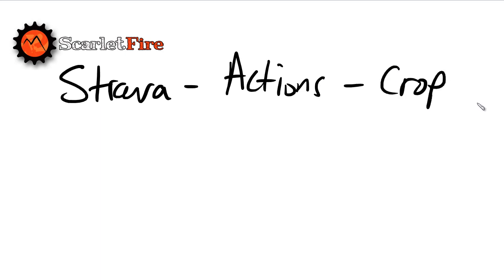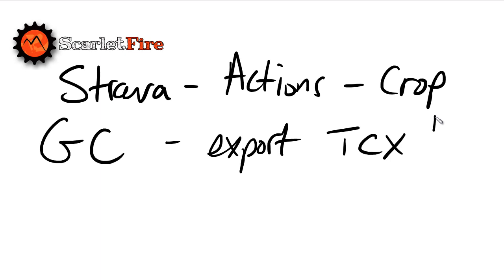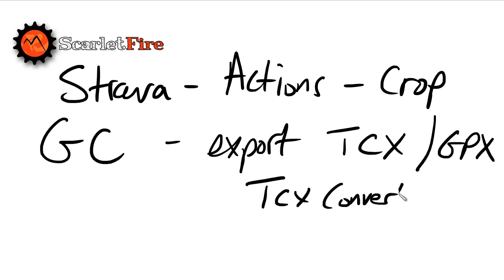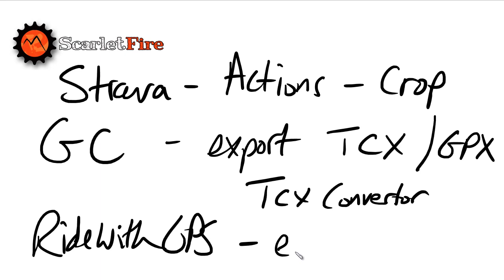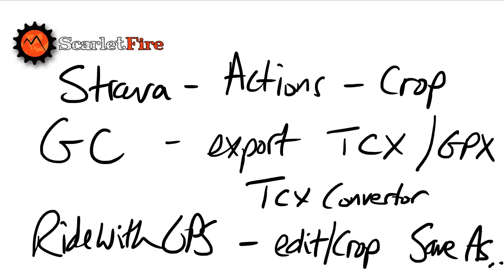Just to summarize those points then: if you're using Strava, go to Actions > Crop Ride — that works very well. If you're using Garmin Connect, your best bet is to export the ride as a TCX or GPX and edit it using another tool such as TCX Converter, which is a free tool. The other option we looked at was Ride with GPS — you can crop the ride and then do a Save As. If you've got any other favorite ways of cropping rides that have gone wrong, please share in the comments — I'd love to hear them. Cheers.